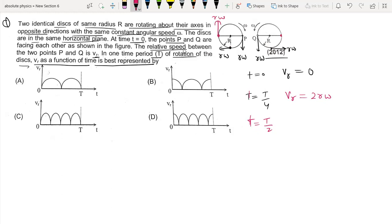The relative speed will be either zero or R omega. The relative speed is 2R omega because it's in the direction of both of them. And then when the time t will go to this position, the relative is zero.